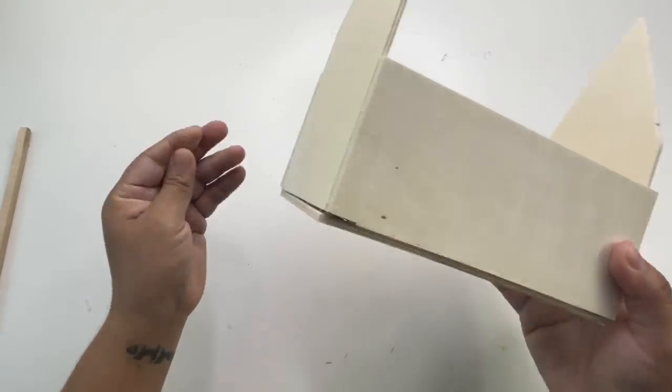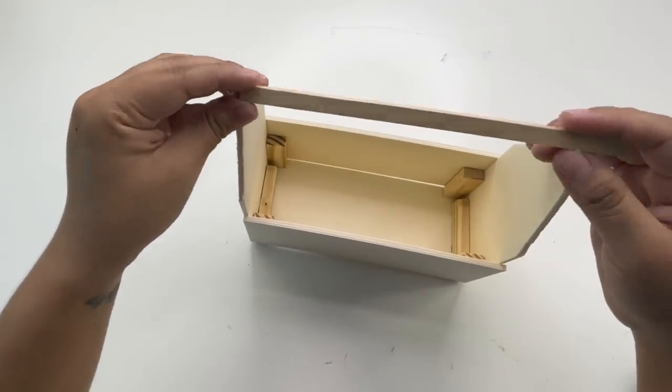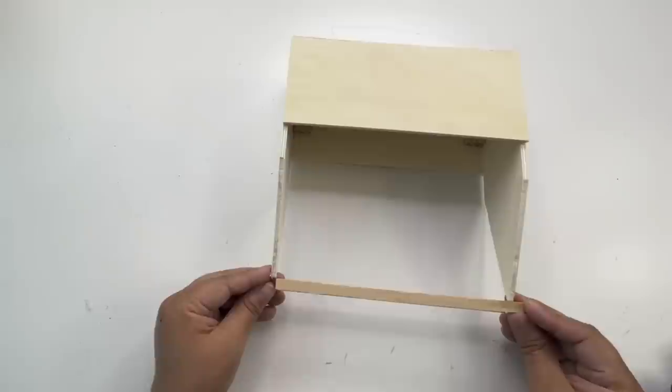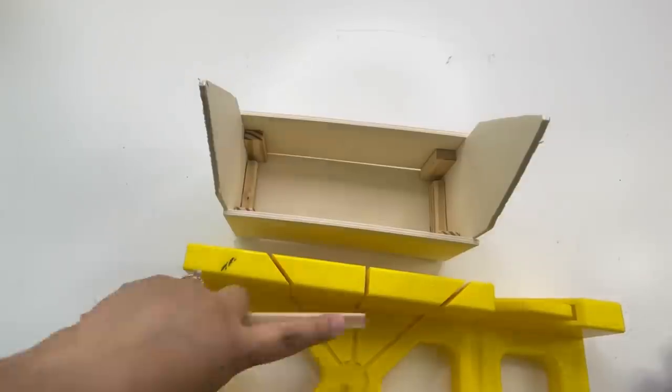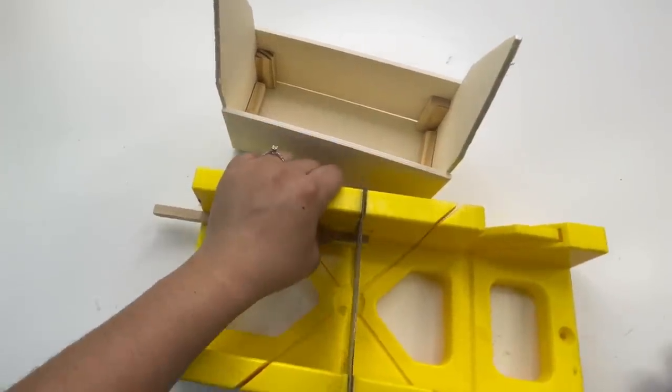For the little handle I'm using a square dowel. Dollar Tree carries circle dowels that you can use instead. I don't remember where I got this from, but I am going to cut it to size then glue it on. To glue this I'm only using hot glue.